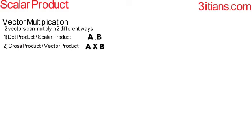The dot product is also called scalar product because the result gives us a scalar quantity, whereas the cross product is also called vector product because the result gives us a vector quantity. In this lecture we will focus on the dot or scalar product. The dot product of two vectors A and B is defined as the product of their magnitudes with the cosine of the angle between them: A dot B equals A times B times cosθ, where A and B are the magnitudes and θ is the angle between the two vectors.